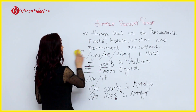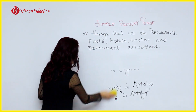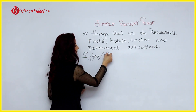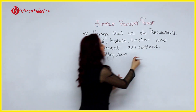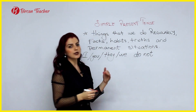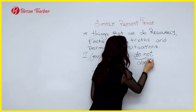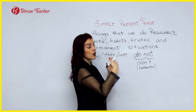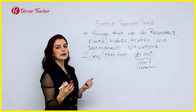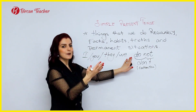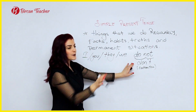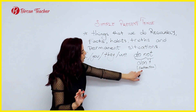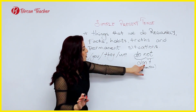In the negative form, for I, you, they, and we, we use the auxiliary verb 'do not' — short form 'don't.' This is the contraction. In formal writing or speaking we prefer the long version, but for speaking with friends and family we always prefer the short contraction form. So: 'I don't work,' 'You don't work' — the verb stays in its present, bare form with no -ing, -s, or any other additions.